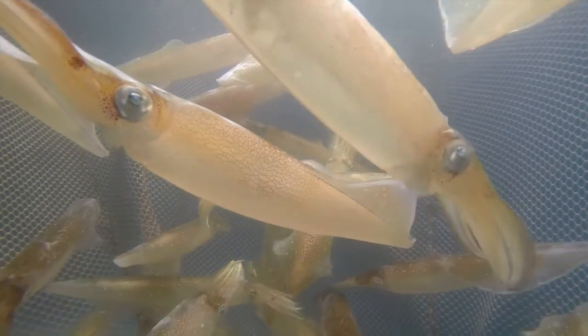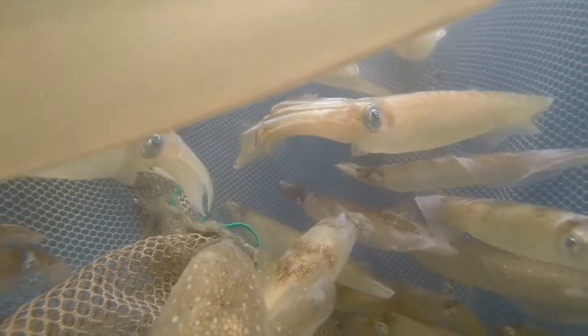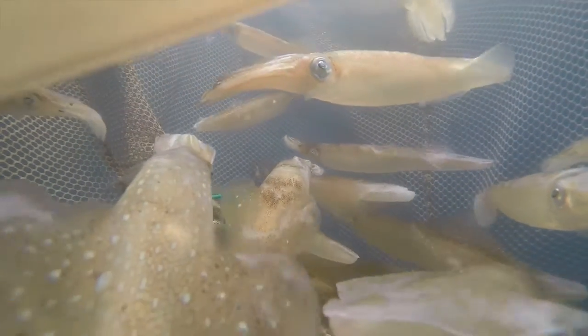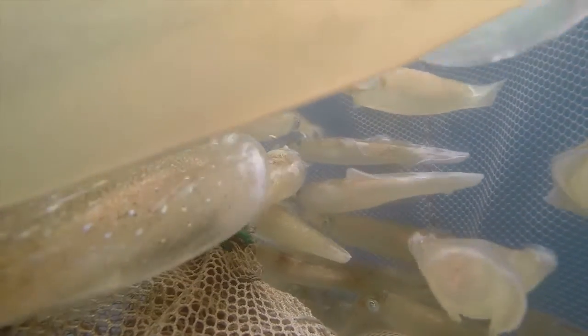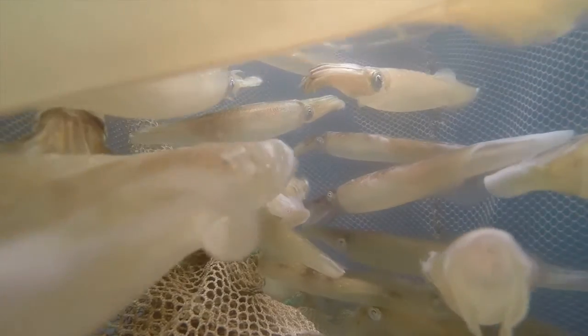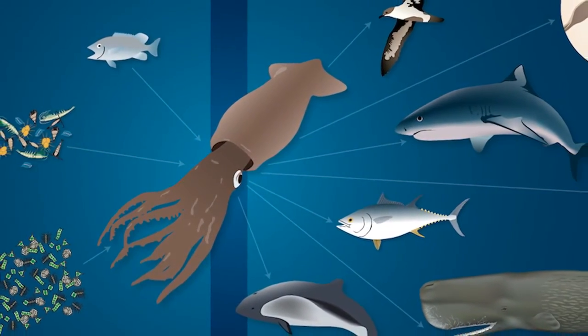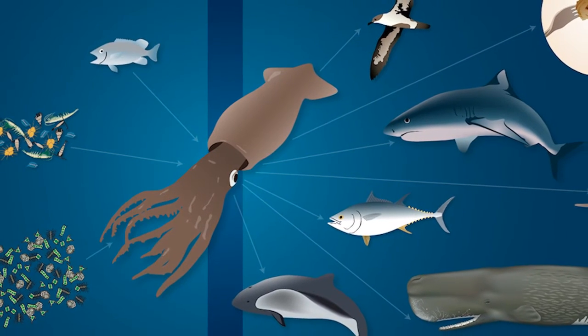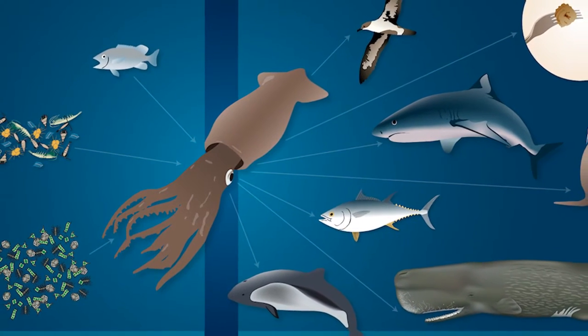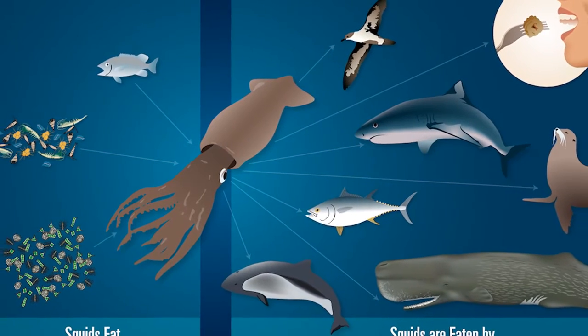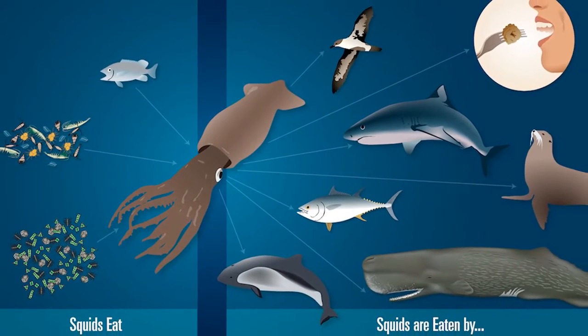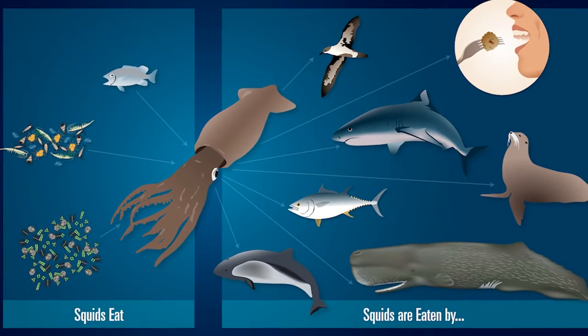We're looking at the local longfin squid here — that's the largest squid fishery in Massachusetts, about a $40 million a year industry. They're really similar to the market squid in California, which is over a $100 million a year fishery. Squid are a primary food source for a lot of marine mammals, seabirds, and the fish that we eat, such as tunas and swordfish. There are very few animals that humans rely on that don't at some point eat squid or get eaten by squid.